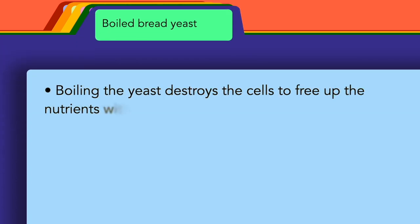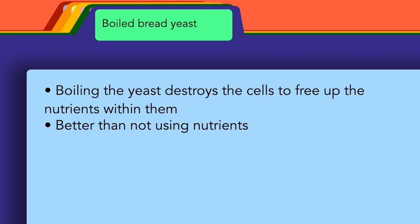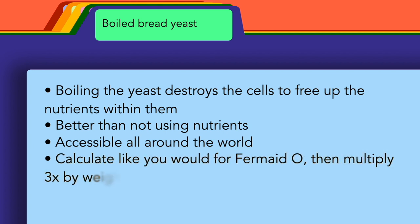Boiled bread yeast: this method is quite similar to that of using yeast hulls as a nutrient. However, it makes this list because it is still better than nothing. And if paired with DAP, it will provide a more balanced nutrient than using only DAP. Additionally, it is perhaps the most accessible item on this list the world around. It is still not a wildly effective nutrient on its own, however. Typically you would use it the same as you would use FermO, but multiply the weight of your nutrient additions by up to about three times.